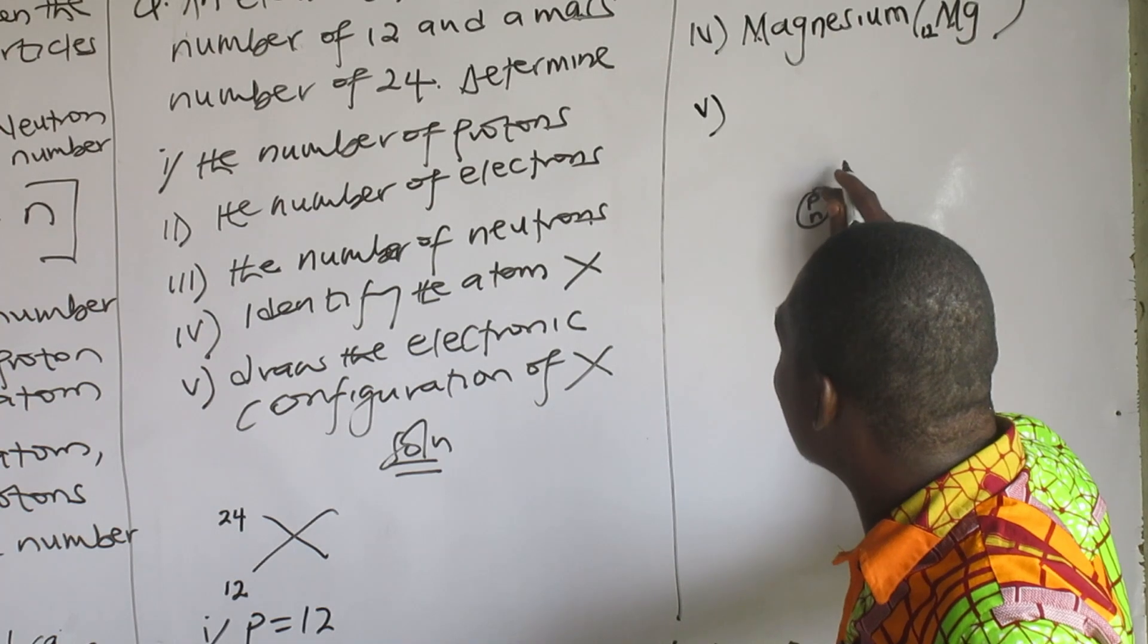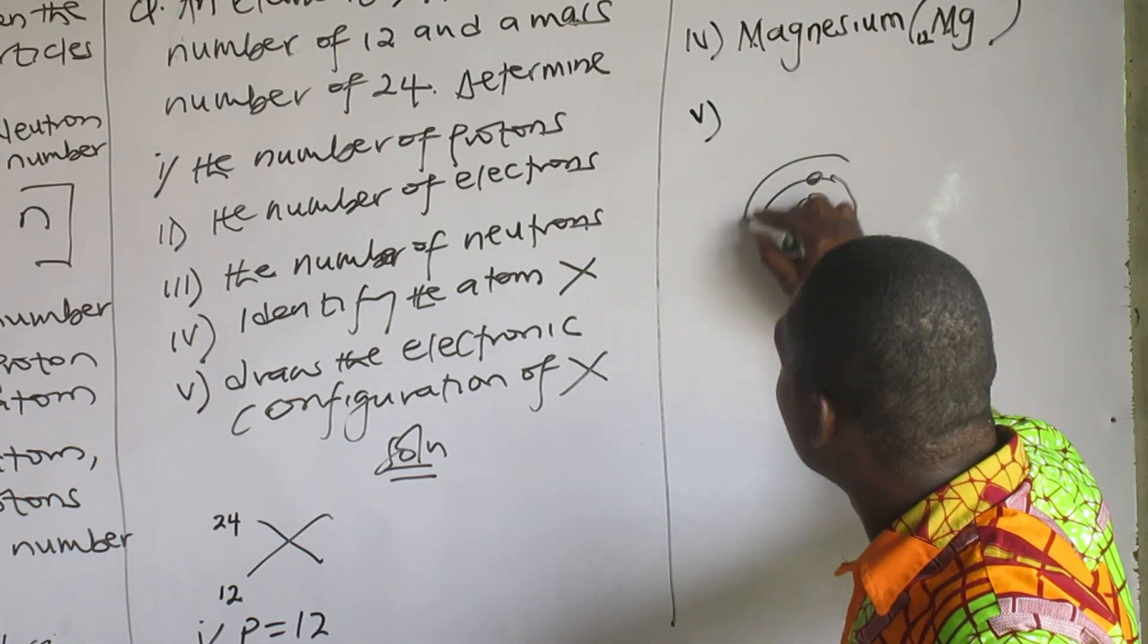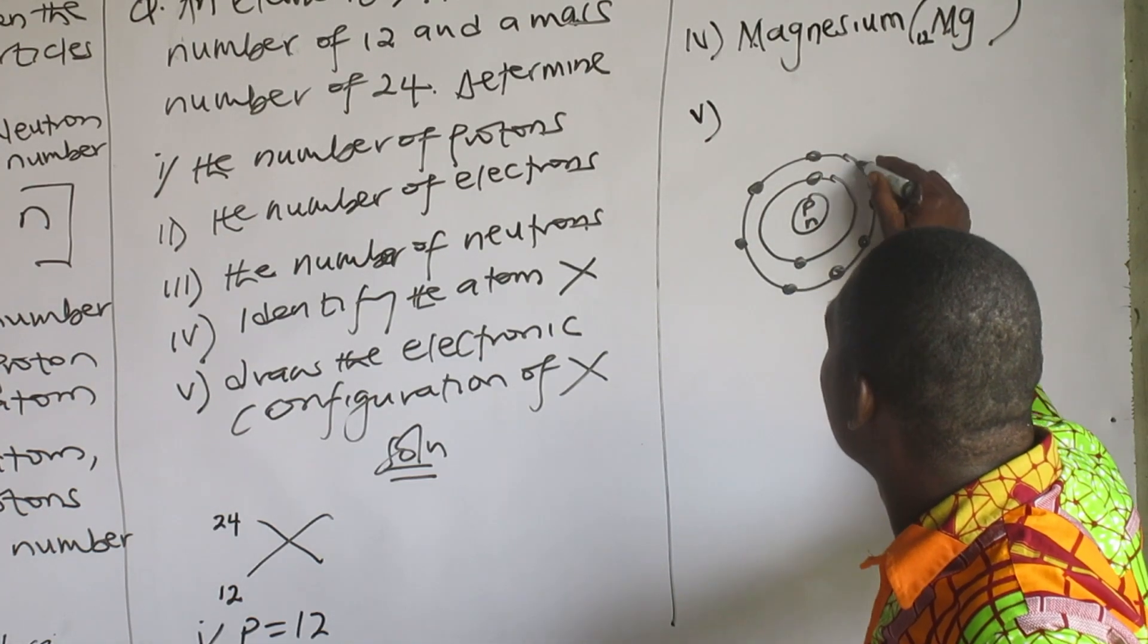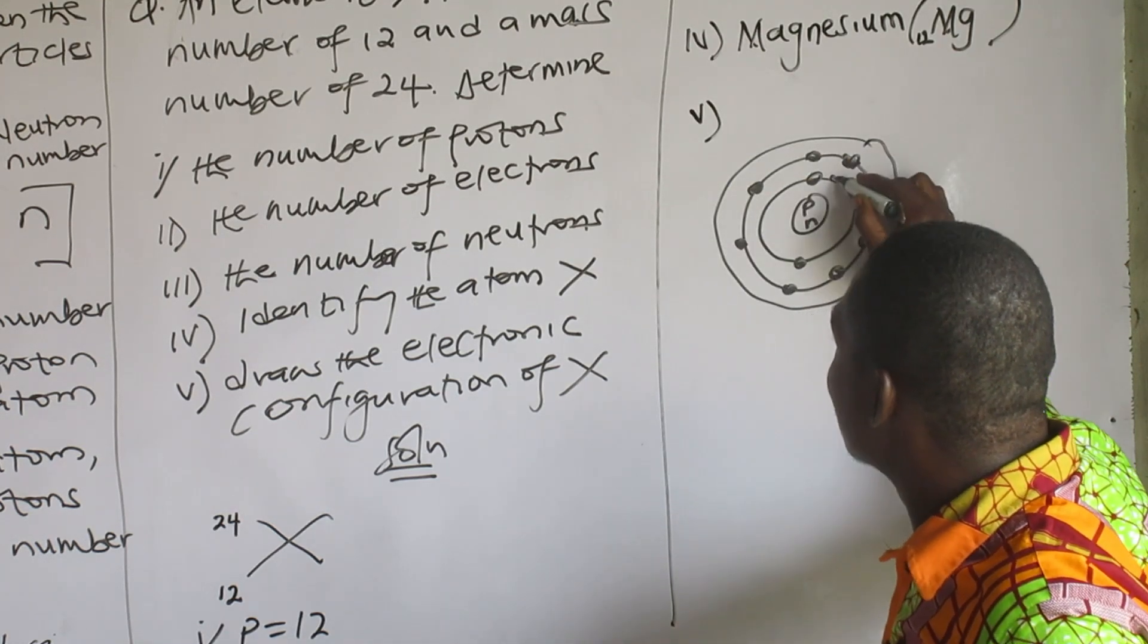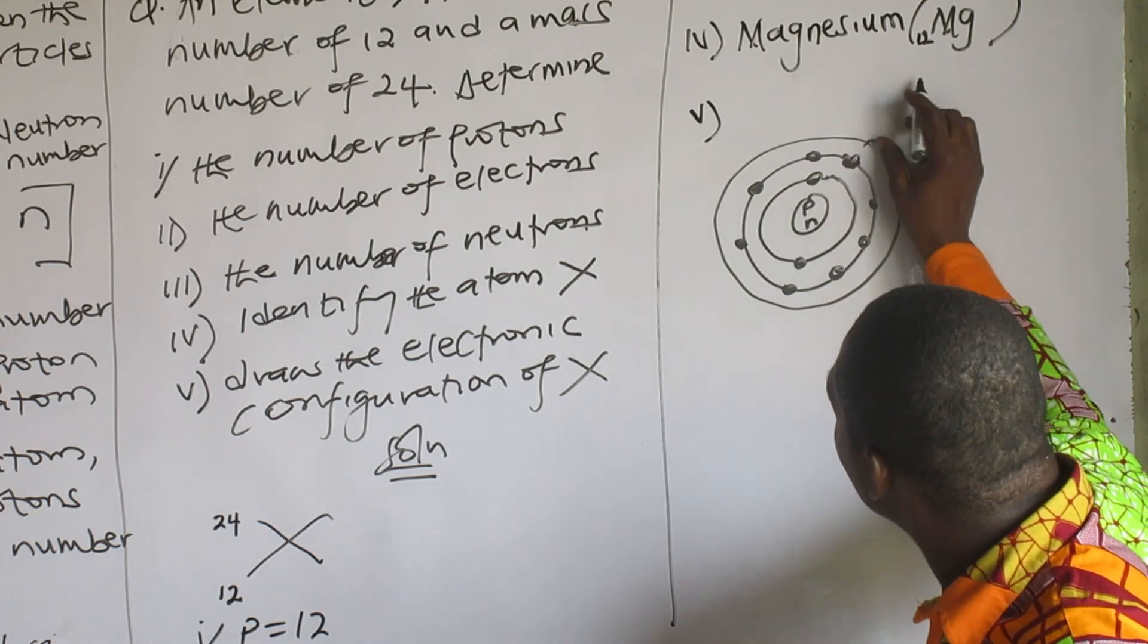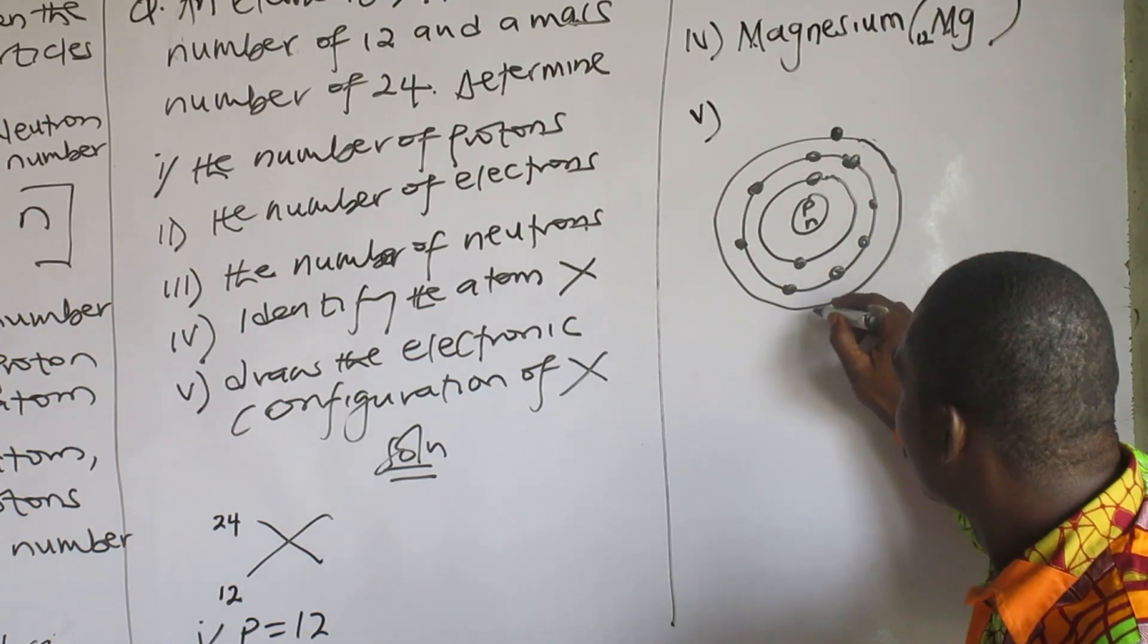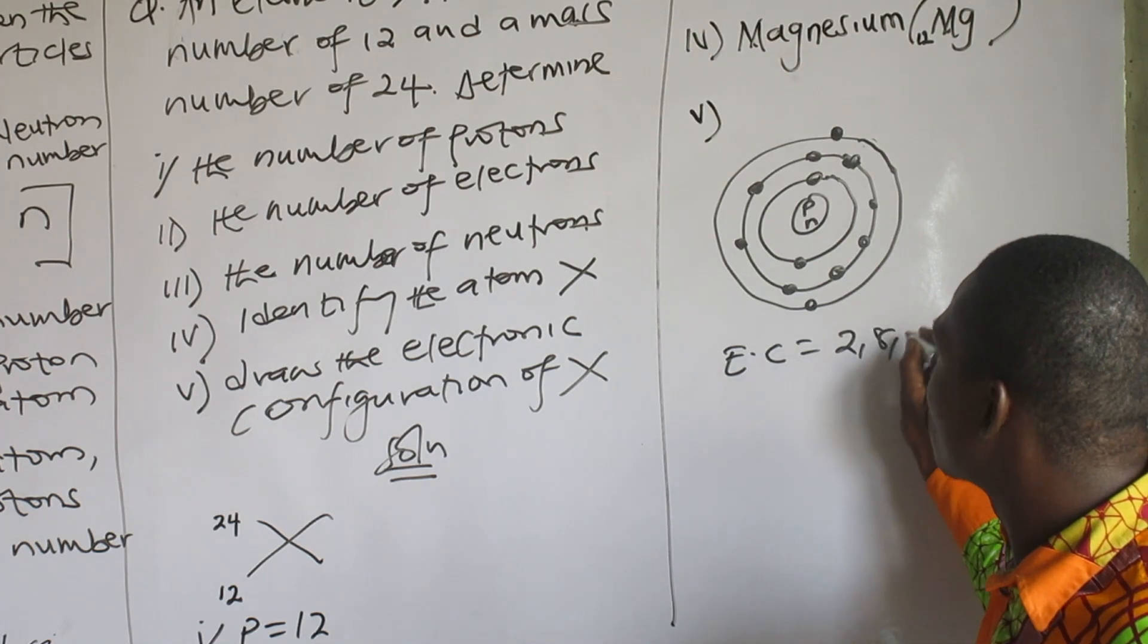So every atom has a central part. There is one, two. There is one, two, three, four, five, six, seven, eight. I'm going to do two more. So that is one, two. My electronic configuration is 2, 8, 2.